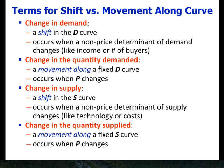To summarize the vocabulary: a change in demand is a shift in the demand curve, occurring when a non-price determinant of demand changes, like income or number of buyers. A change in quantity demanded is a movement along a fixed demand curve, occurring when price changes. Similarly, a change in supply is a shift in the supply curve, occurring when a non-price determinant like technology or costs changes. A change in quantity supplied is a movement along a fixed supply curve, occurring when price changes.